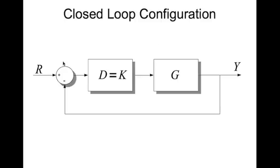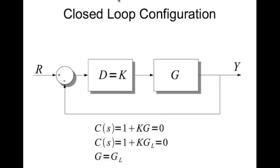Now if you write the characteristic equation we can write this as 1 plus DG equal to 0, D equal to K. So it is 1 plus KG equal to 0 and we can put it in the characteristic equation in this form 1 plus KGL equal to 0, and from this we can realize that G equal to GL.